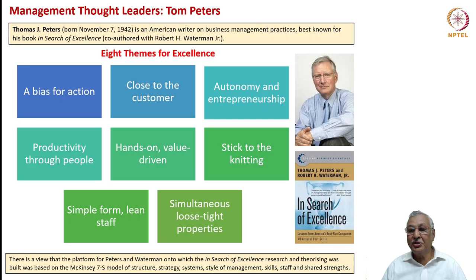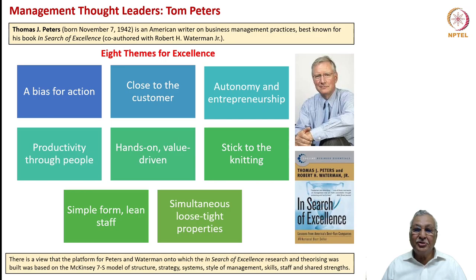Tom Peters — not to be confused with Lawrence Peter — is a noted American writer on business management practices. He came up with eight themes for excellence in his book In Search of Excellence. He said there should be a bias for action on the part of leaders; leaders must be close to the customer; they should exhibit autonomy as well as entrepreneurship and let the organization also experience and enjoy autonomy and entrepreneurship; and productivity can be achieved only through people.